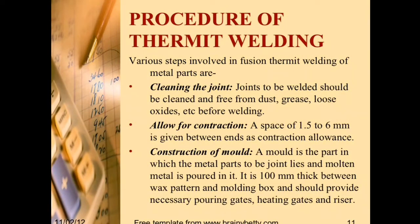Procedure of thermite welding — various steps involved in fusion thermite welding of metal parts: Step 1, cleaning the joint — joints to be welded should be cleaned and free from dust, grease, and loose oxides before welding. Step 2, allow for contraction — a space of 1.5 to 6 mm is given between ends as contraction allowance.